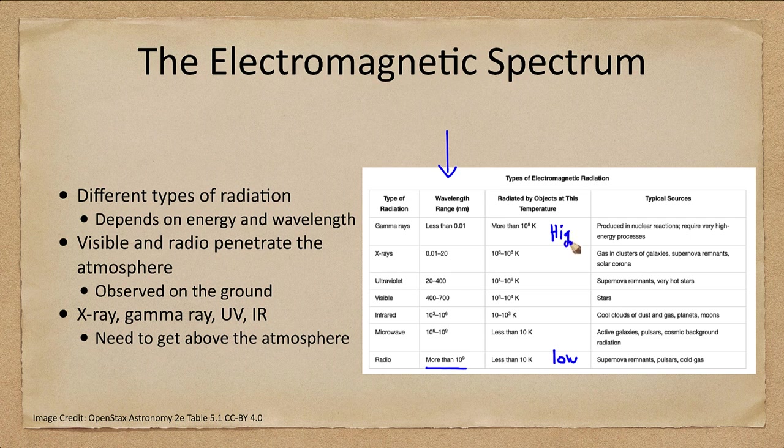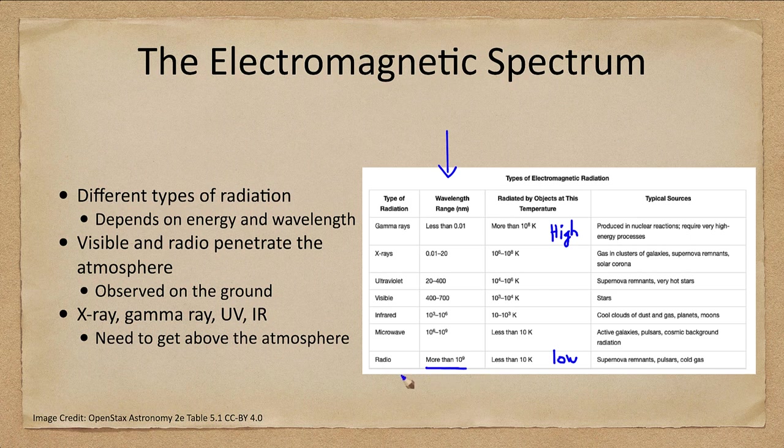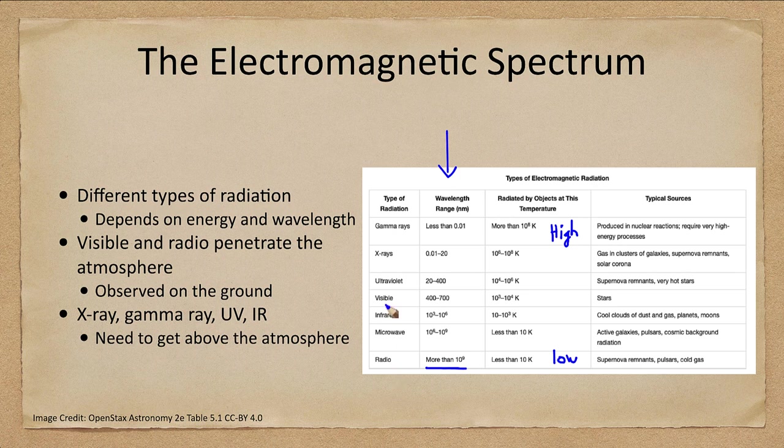It takes a lot of energy to give off the high energy particles. So when we're looking at cool objects, cold gas and things, we'll get a lot of radio waves. Visible light is stars and galaxies.